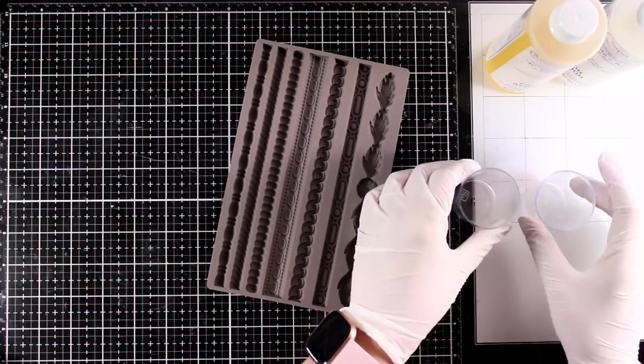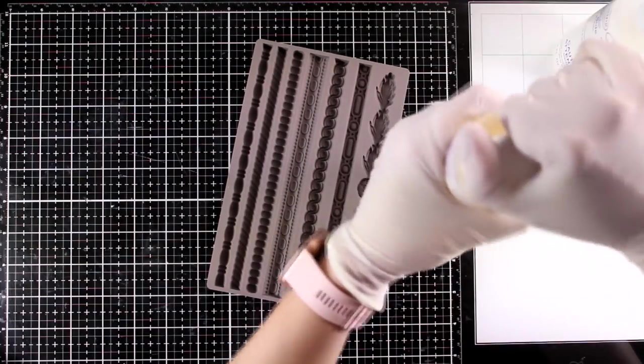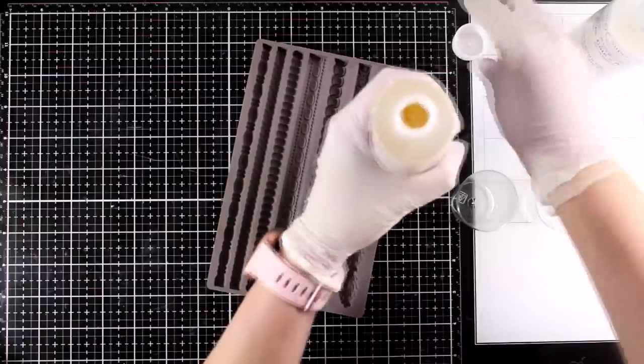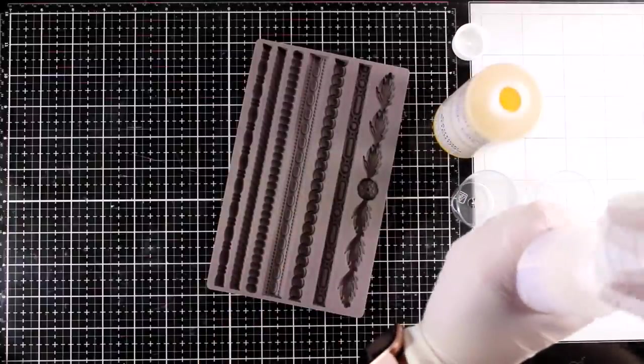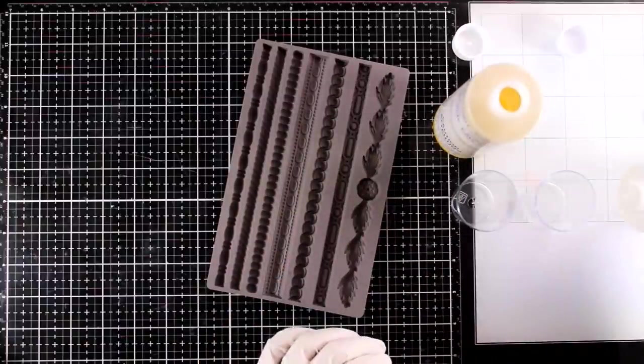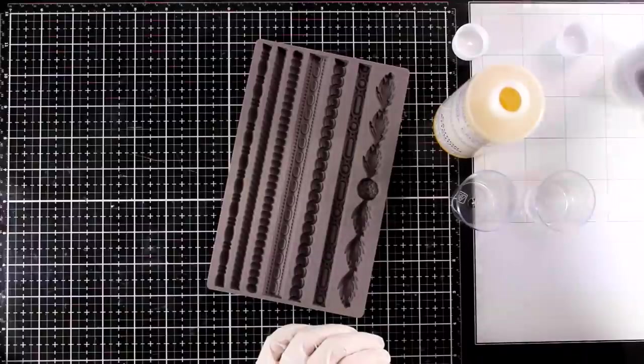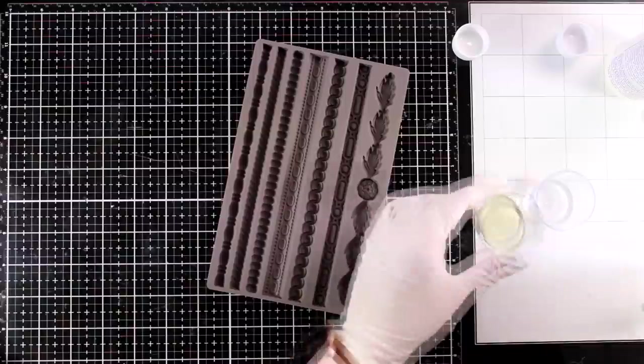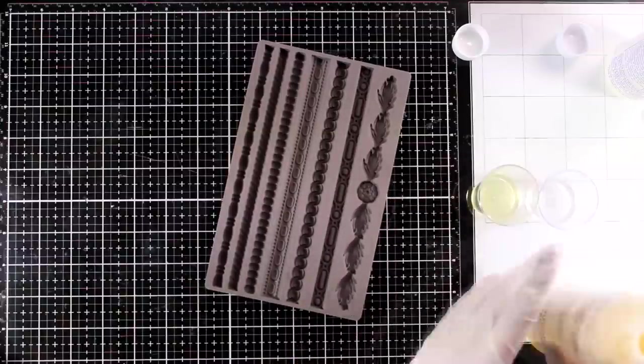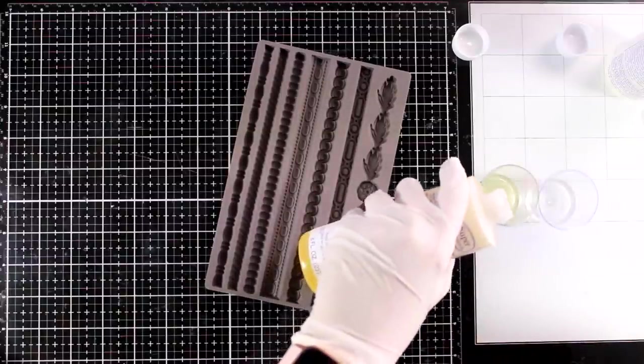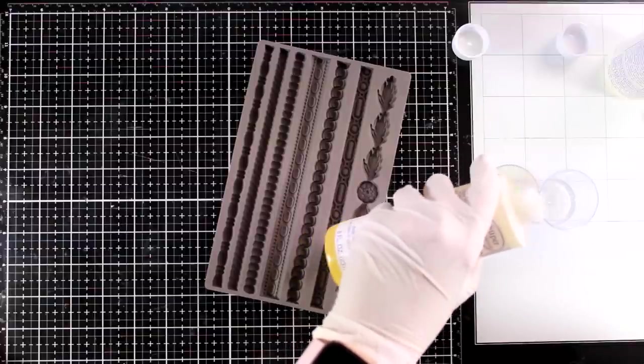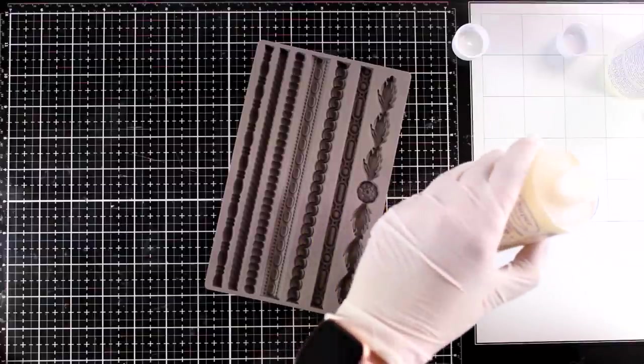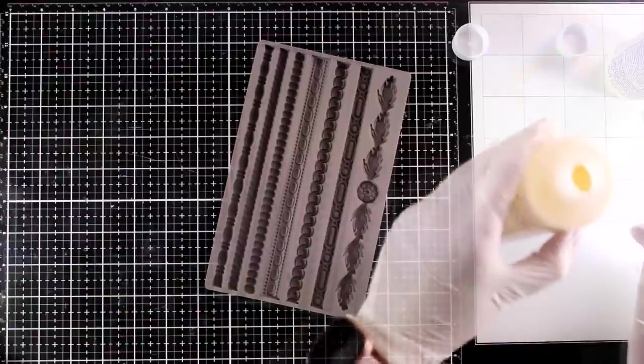So I am going to show you now how it works. You can use a scale if you want to be super precise. I am not, I am just going to eyeball it. This resin, the fast cure one is quite forgiving, so I am just going to eyeball and make sure that I have both those liquids pretty much the same. This resin doesn't smell at all so you won't feel uncomfortable but just make sure that you have the windows open.